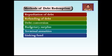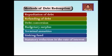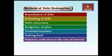Next is the statutory reduction in the rate of interest. In this case, the government compulsorily reduces the rate of interest. It is compulsory for all people and all institutions to adopt the reduced rate. In other words, the creditors are forced to accept the reduced rate of interest.